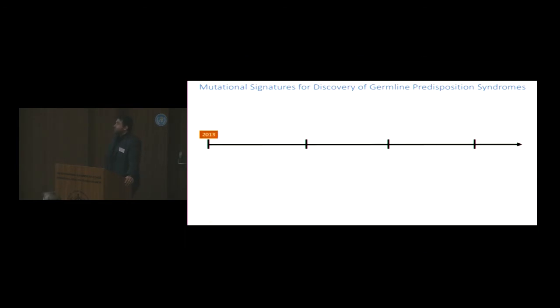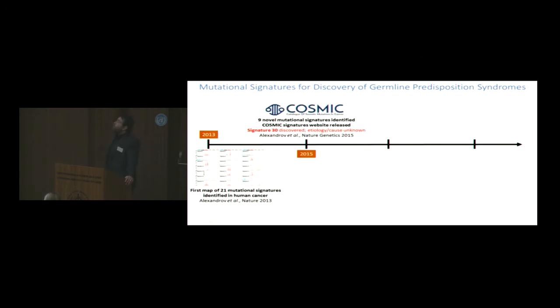I'm going to make that point showing you what we've done and how others have taken that work and actually discovered this predisposition syndrome. In 2013, we published the first comprehensive map of mutational signatures. There were 21 signatures. Just two years later, we actually released the first version of the cosmic website. We found additional nine mutational signatures. One of these nine mutational signatures was signature 30. That signature 30 was found in three or four samples. It had unknown etiology at the time. We didn't know what it was. We were sure it was real. We reported it.